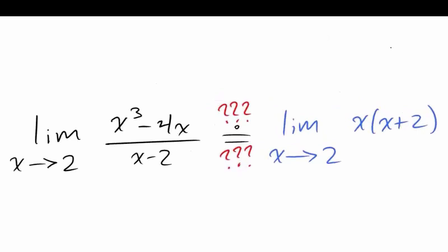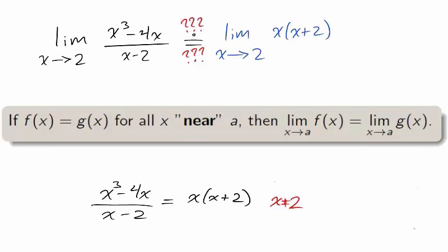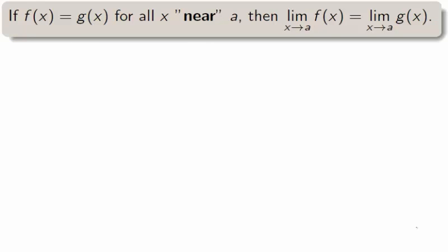The natural question to ask is what is the connection between the limit of the original function and the limit of the polynomial x times x plus 2? It turns out that they are equal. For example, notice that the rational function and the polynomial are equal everywhere but 2. Therefore, their limits, their trends, as x approaches 2, are the same.